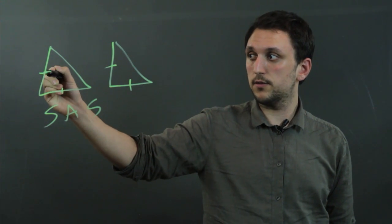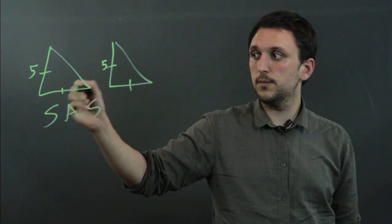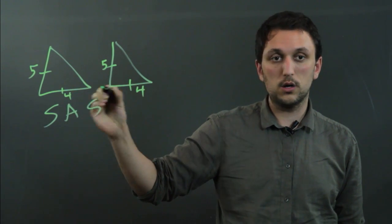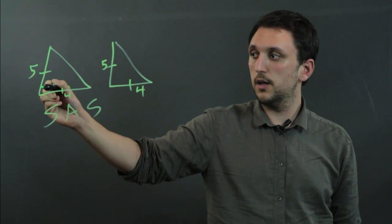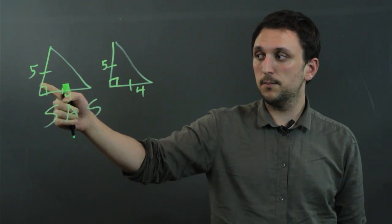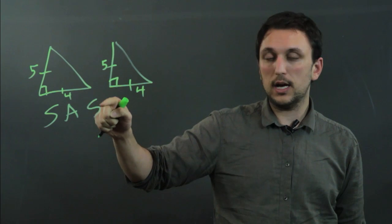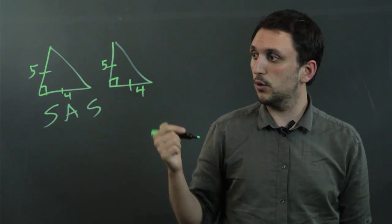So this side, let's say this side is 5 and this side is 5 and we know this side is 4 and this side is 4, well if we know that the angle in between them is the same, so let's say this is 90 and this is 90, then side angle side proves that these two triangles are congruent.